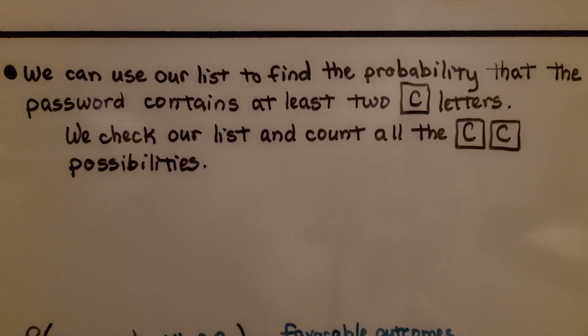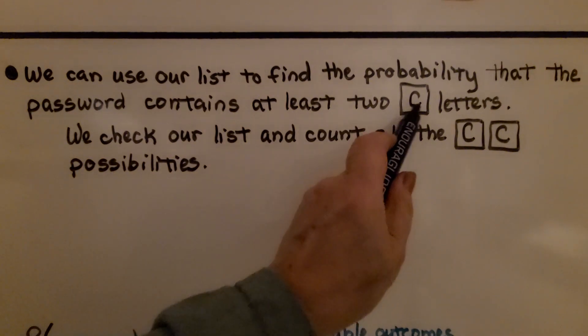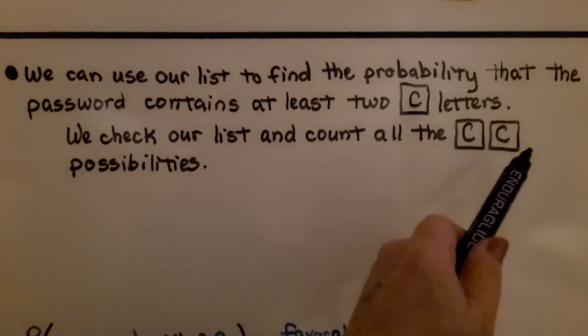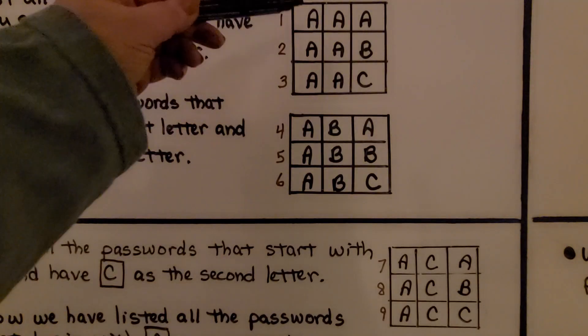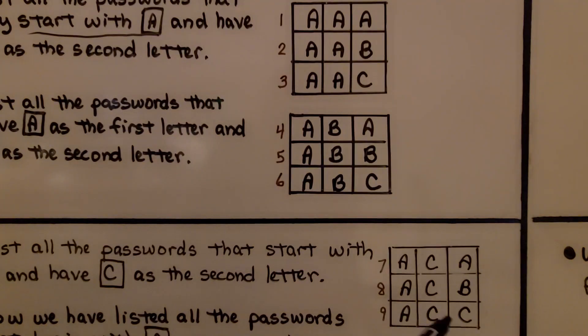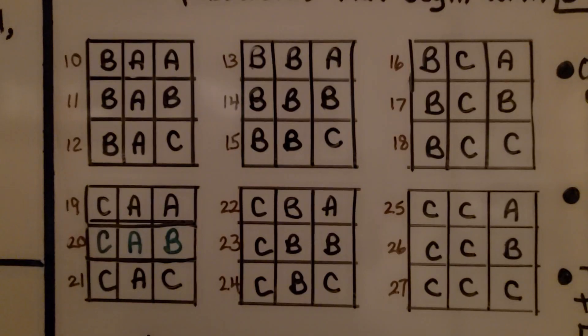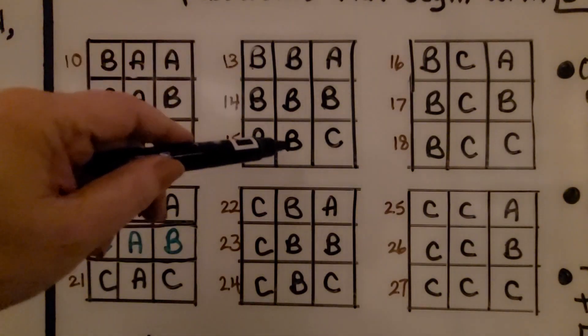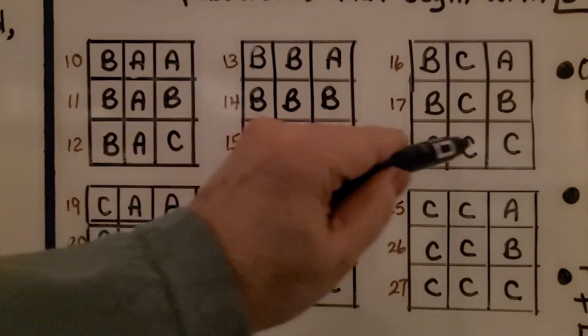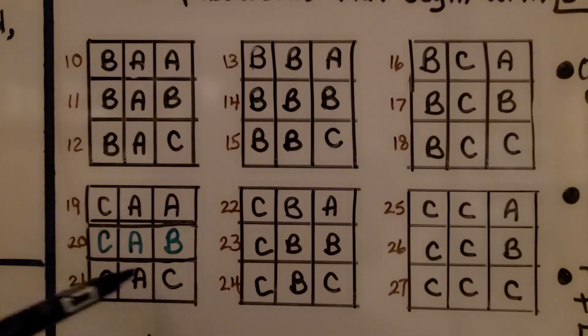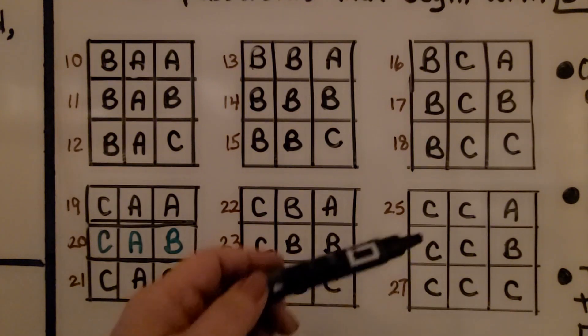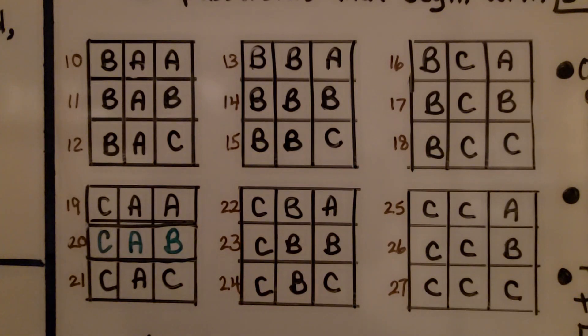We can use our list to find the probability that the password contains at least two C letters. We check our list and count all the C, C possibilities. They don't need to be next to each other. The password just needs to have two Cs. Checking our passwords that begin with A, I only see this one down here, the ninth one, that has two Cs in it. So, that's one that has two Cs. Then, checking our passwords that begin with B, I see another one that has two Cs. So, now we have a total of two for beginning with C. So, remember, we have two. Here's three. Here's four. Here's five. Here's six. Here's seven. There are seven passwords that contain two letter Cs.